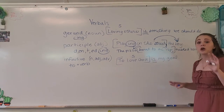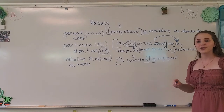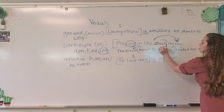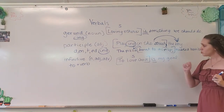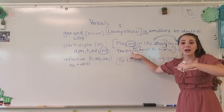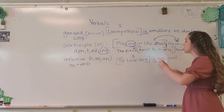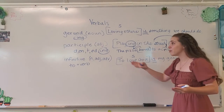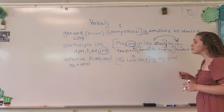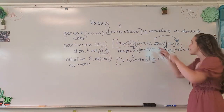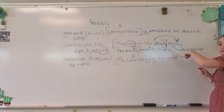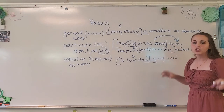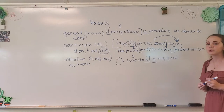Oftentimes, participles are also appositives. For example: 'The pizza, burnt to a crisp, tasted horrible.' 'Burnt to a crisp' comes right after 'pizza,' and the '-t' ending should be very telling that it's a participle. So participles come right at the beginning with a comma and modify the subject, or they come right after a noun as an appositive. That's the easy way to find participles.